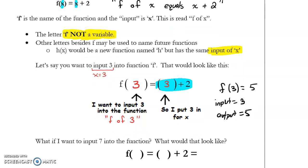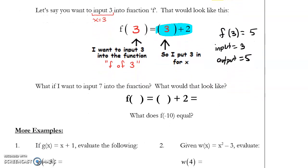Let's do one more example. If I want to input 7 into that function, what's that going to look like? Well, 7 is my new x value. That's my input. Not 3 anymore, it's 7. So I want f of 7. I'm inputting 7 where x was, so I input that here.